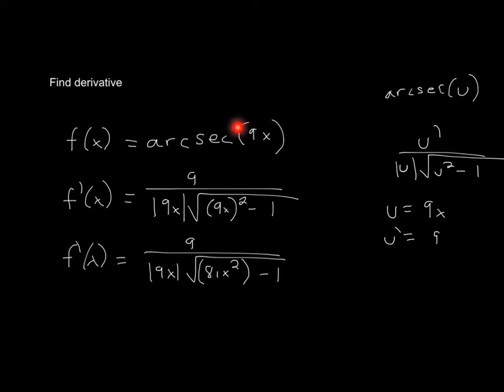In this instance, I'm saying that u is equal to 9x, and u prime is equal to 9. Meaning, it's just the derivative of whatever this is, and the derivative of 9x is 9.